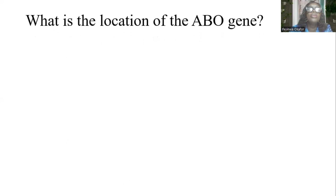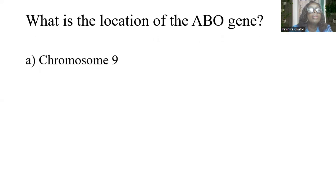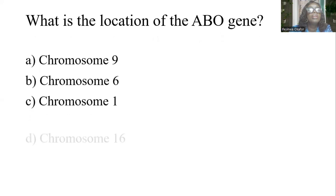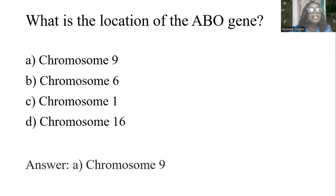What is the location of the ABO gene? Options: A) Chromosome 9, B) Chromosome 6, C) Chromosome 1, D) Chromosome 16. The answer is A: Chromosome 9.